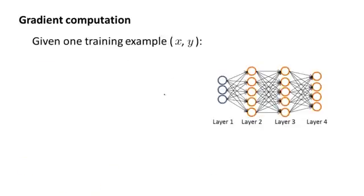Let's start by talking about the case of when we have only one training example. So imagine that our entire training set comprises only one training example, which is a pair x, y. And let's step through the sequence of calculations we will do with this one training example.